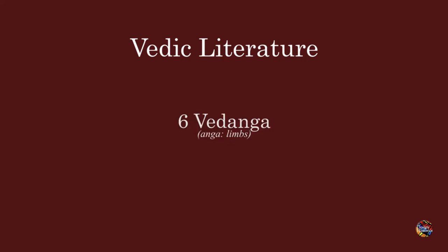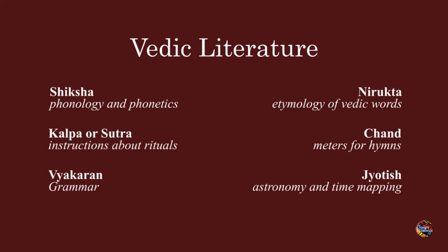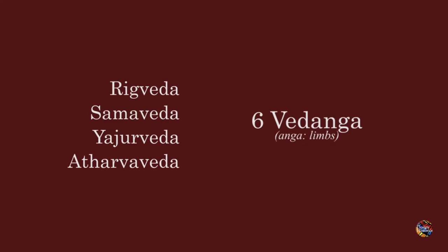There are six other texts included in the Vedic literature called Vedangas. Shiksha is about the phonology, phonetics, and pronunciation of Vedic hymns. Kalpa, also known as Sutra, is a collection of instructions for carrying out Vedic rituals. Vyakran is grammar. Nirukta is the etymological dictionary of Vedic words. Chandashastra is a text about various meters used for chanting the hymns. Jyotish deals with the relation of rituals with astronomy and timekeeping. The four Vedas and six Vedangas together form the Vedic literature.